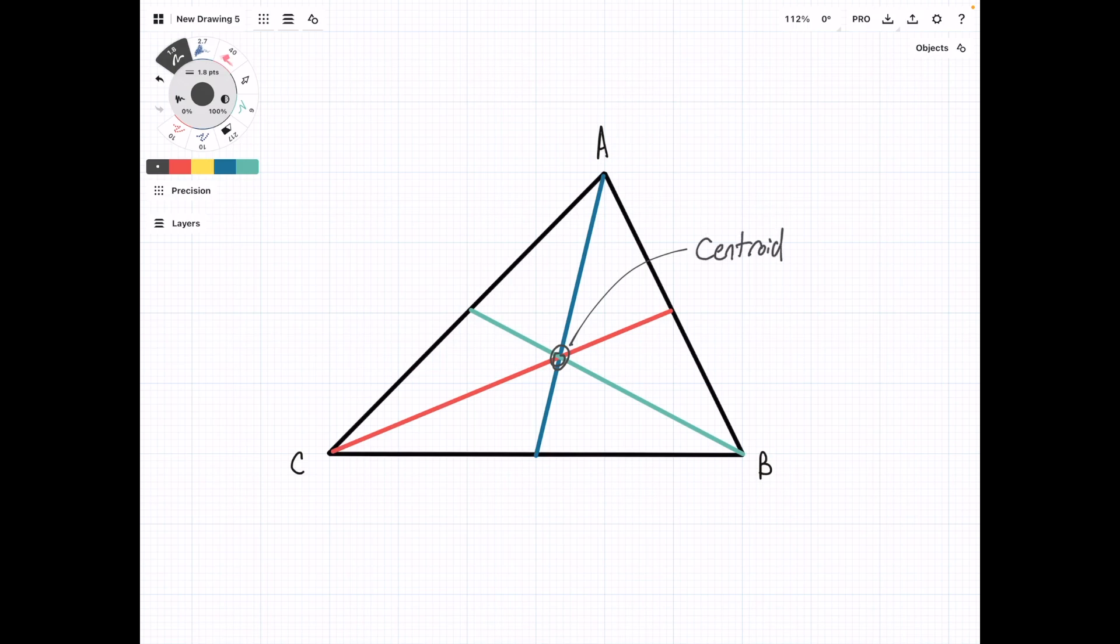The centroid is interesting because it divides each of the medians into a 2 to 1 ratio. So for example, if we're looking at the blue line, the centroid will divide it into 2x and x, where the longer side is always closer to the vertex where it came from.